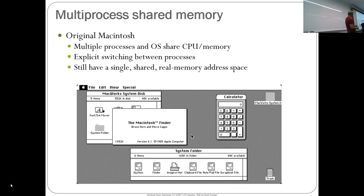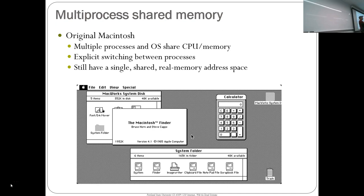The original Mac allowed multiple processes to share the same address space. You have the Finder, a calculator, and the operating system all running at the same time, sharing the exact same memory space. They cooperate with each other to provide a multitasking experience where you can go from one program to another by explicitly switching. They share that single shared real memory address space, swapping the CPU when you switch tasks.